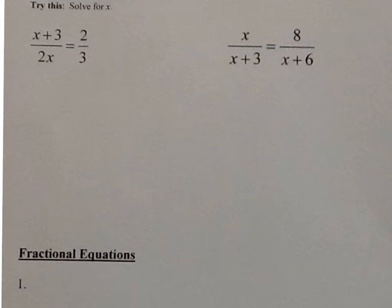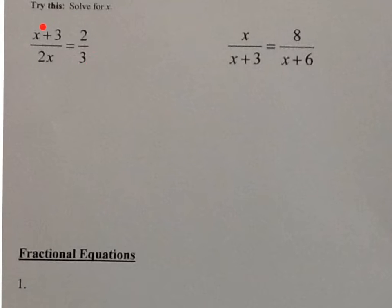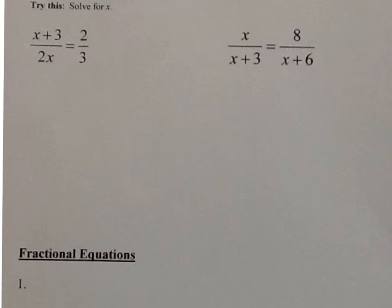What we're going to be talking about today are fractional equations. This should be familiar - this is a type of fractional equation, and this one here on the right too. They're called proportions - it's when two fractions equal each other. You've learned that when two fractions equal each other, all you need to do is cross multiply, and that is correct.